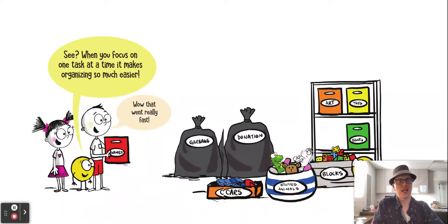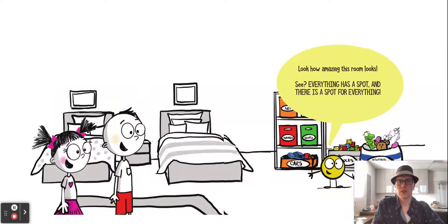Sometimes it can be useful to have an adult or an older sibling help you. Whoa, look how amazing this room looks. If your parents see your room clean like that, they are going to lose their minds. See, everything has a spot and there is a spot for everything.